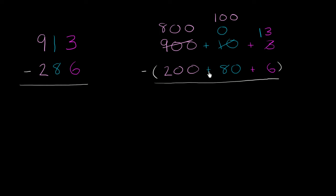You might say, wait, isn't there a positive sign here? But we have this negative out here. So we're subtracting 6 from 13. We're subtracting 80 from 100, subtracting 200 from 800. So let's do it.